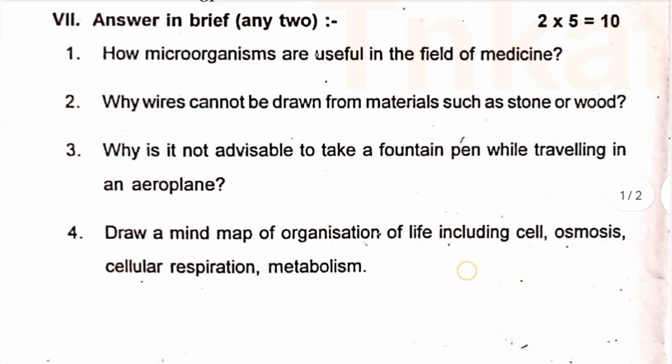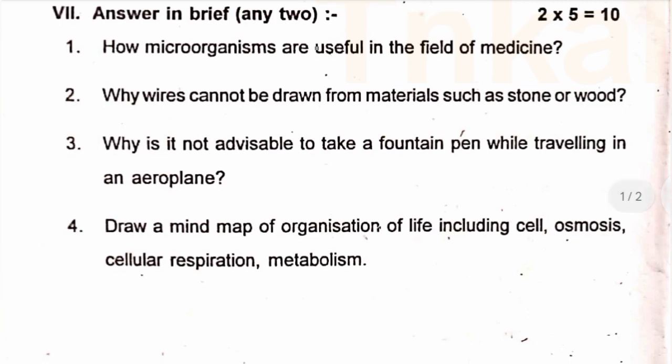Roman number 7: answer in brief, any two. Five-mark questions. First: how are microorganisms useful in the field of medicine? Second: why can wires not be drawn from materials such as stone or wood? Third: why is it not advisable to take a fountain pen while travelling in an aeroplane? Fourth: draw a mind map of organisation of life including cell, osmosis, cellular respiration, and metabolism.